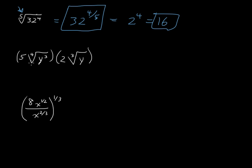Now on the next one, we've got 5 times the fourth root of y to the third, times 2 times the third root of y. So let's do the same old game here. We've got 5 times y to the three-fourths.